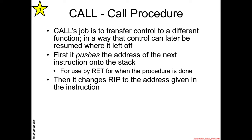The first one: call. Call's job is to transfer control to a different function in a way that control can later be resumed where it left off. Basically, it's going to push the address of the next instruction onto the stack. Implicitly, that push is going to move RSP down by 8, and that's going to serve as what we call the return address, which will be used by the return instruction in order to get back to the calling function.